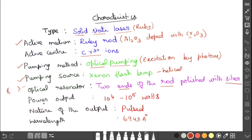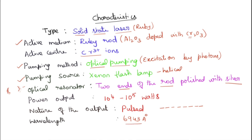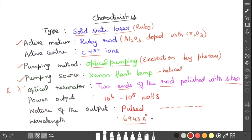The power output is 10⁴ to 10⁵ watts. The nature of the output is pulsed, not continuous, because this follows a three-level laser system. The wavelength produced is 6943 Angstroms, corresponding to red color laser light.